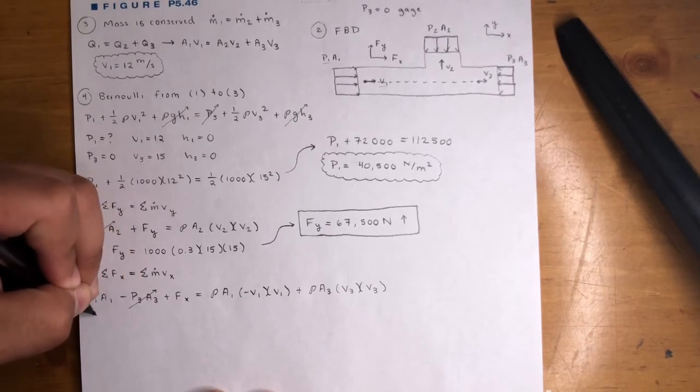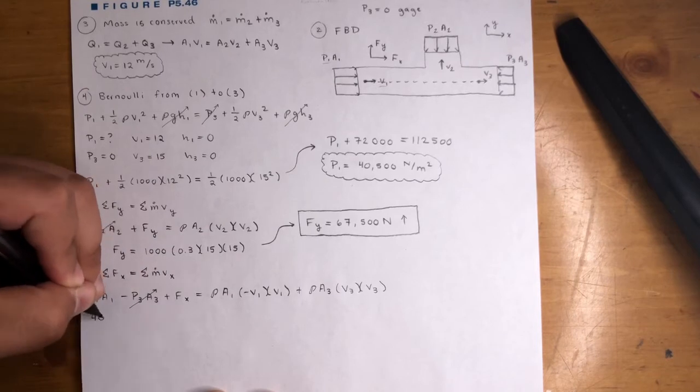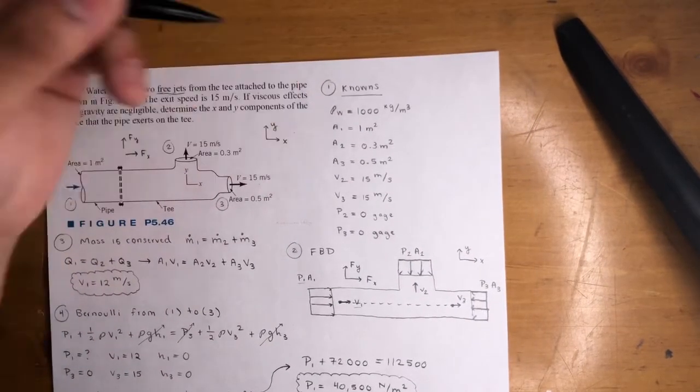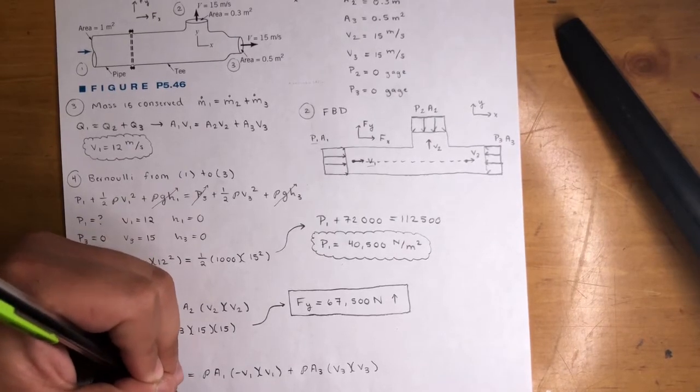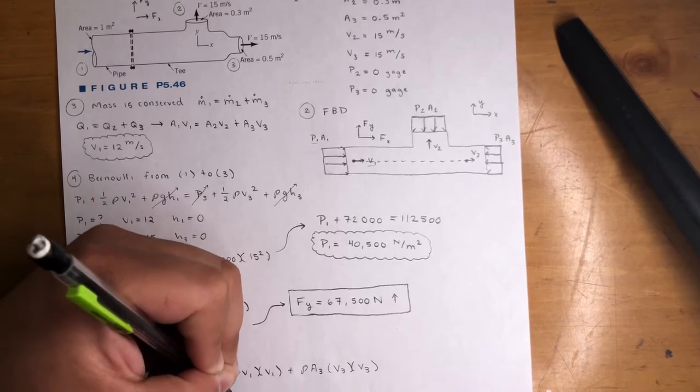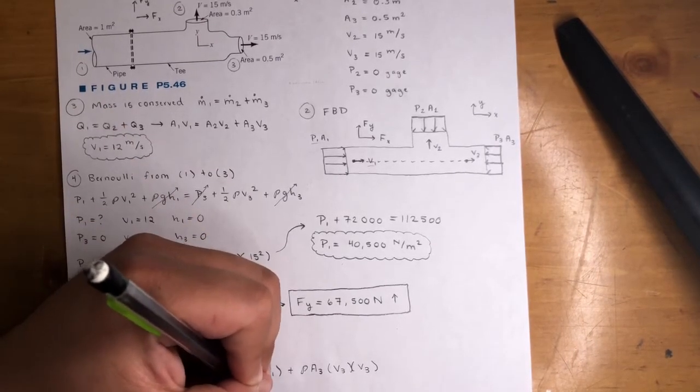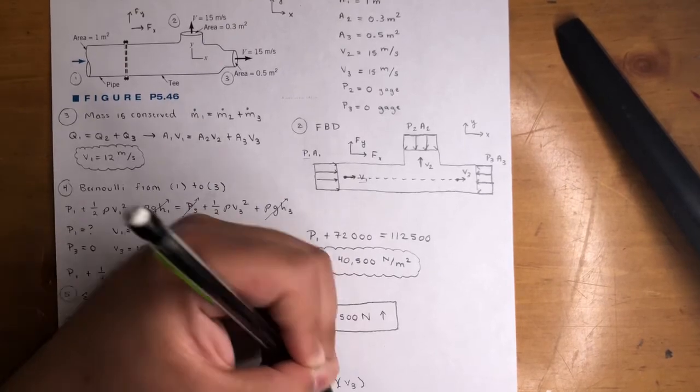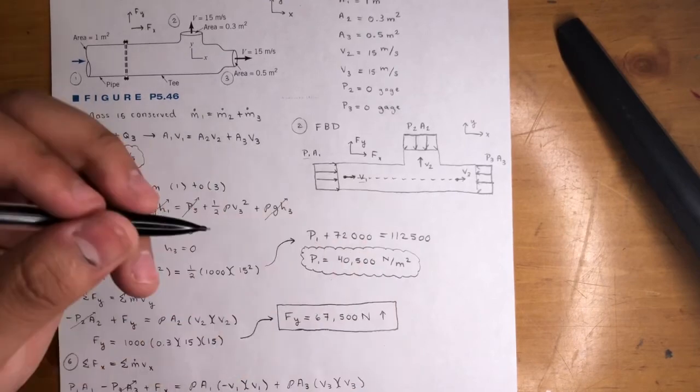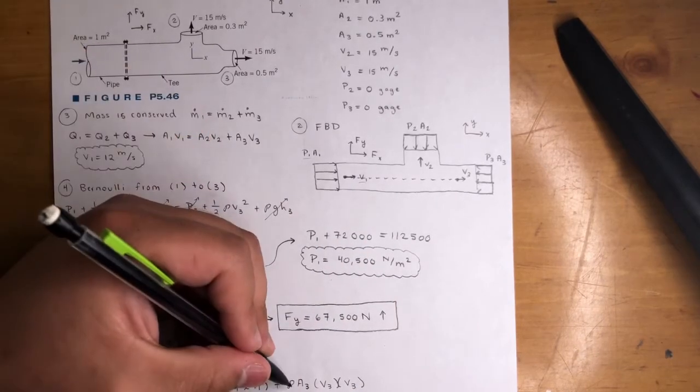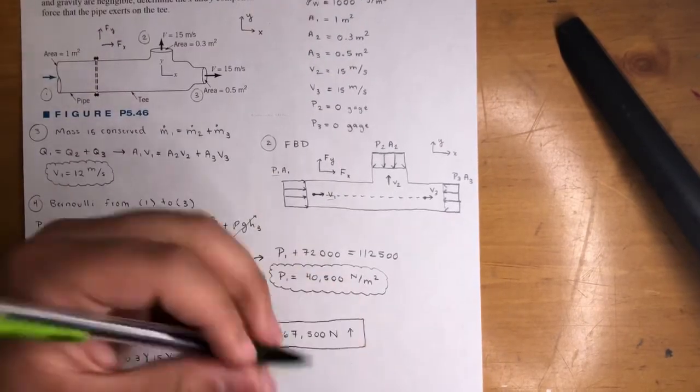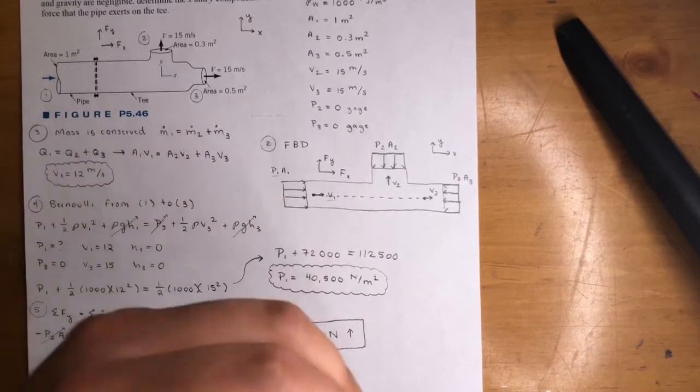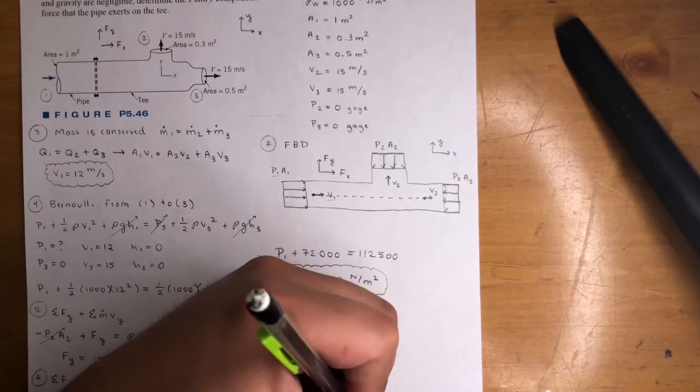P1 we found out in step 4 was 40,500. A1 is 1 meter squared. Plus Fx equals 1,000 times A1, and then V1 is negative 12 found here, times 12, plus 1,000 density times A3 which is 0.5, and then V3 is 15, then 15 again.